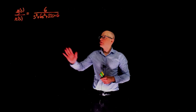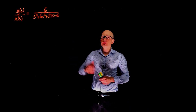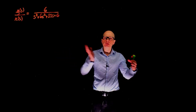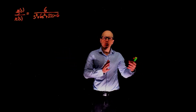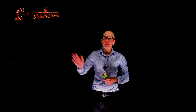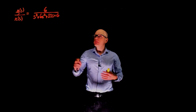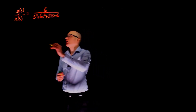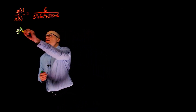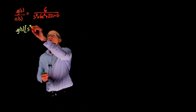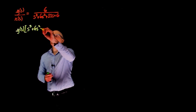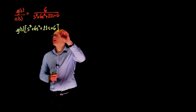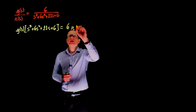In this next example, we are given a transfer function in the frequency domain, and we are looking to go from the frequency domain back to the temporal domain and use a state-space representation for this same transfer function. We can start by rewriting this expression as y(s) times s³ + 6s² + 11s + 6 equals 6 times r(s).